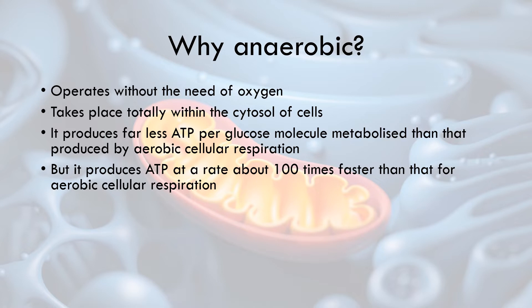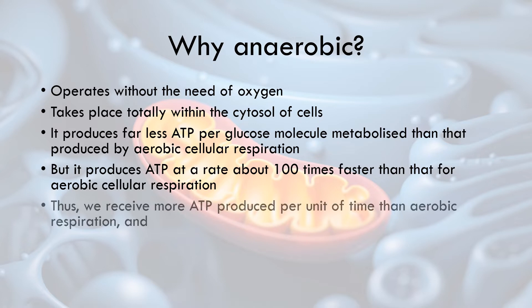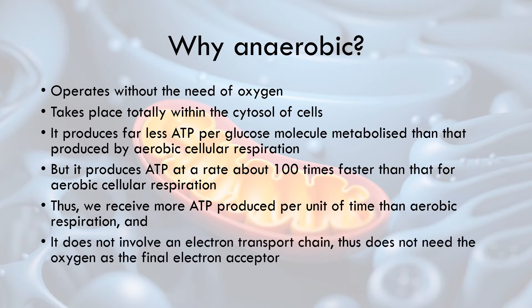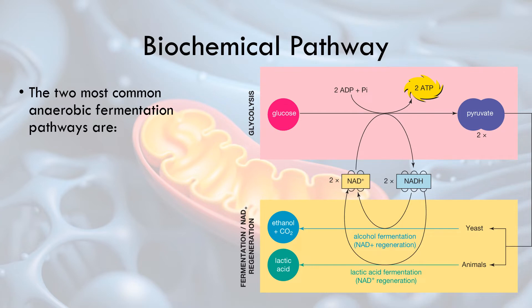Think of all the processes — the Krebs cycle and the electron transport chain — and everything that has to occur to actually generate that ATP from a molecule of glucose. There's a lot involved, whereas with anaerobic fermentation it's very quick and easy to get that ATP. So we receive more ATP produced per unit of time — not per glucose, but per unit of time — than aerobic respiration, and it doesn't involve an electron transport chain, so it doesn't need oxygen as the final electron acceptor.